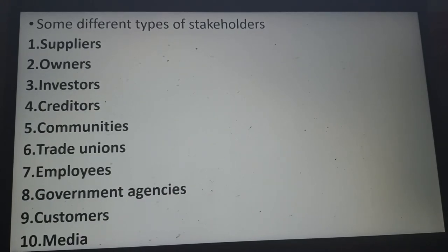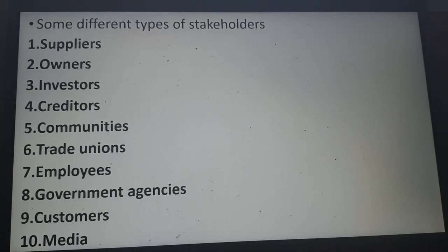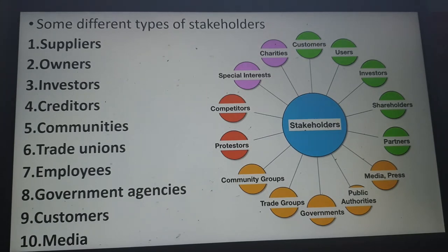Some different types of stakeholders include suppliers, owners, investors, creditors, communities, trade unions, employees, government agencies, and customers. Looking at this diagram, we also see users, shareholders, partners, media, public authorities, trade groups, community groups, protesters, competitors, special interest groups, and charities. This is like a menu — a buffet — to help you select which are your stakeholders and categorize them as primary, secondary, or tertiary.